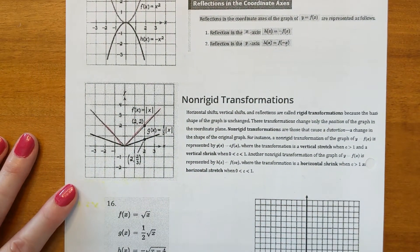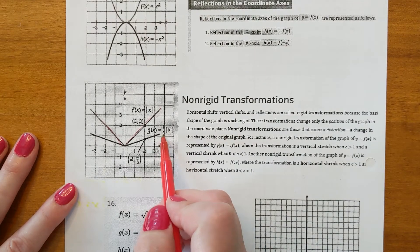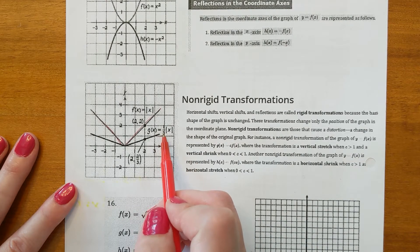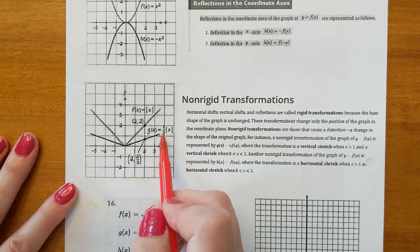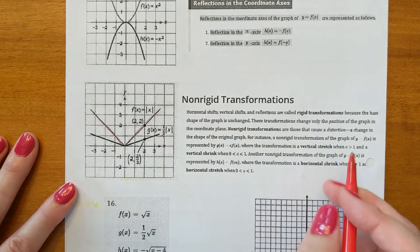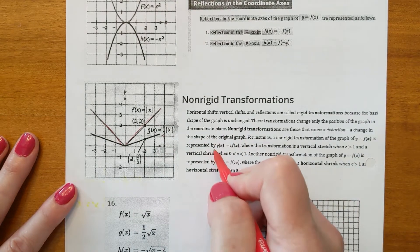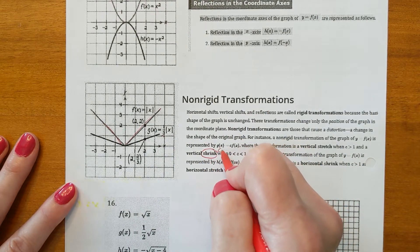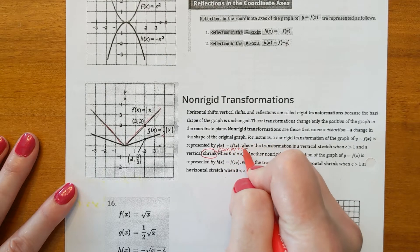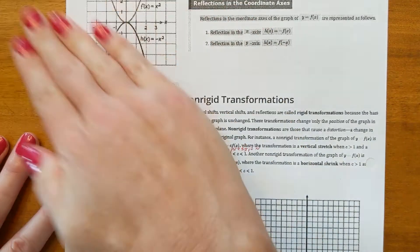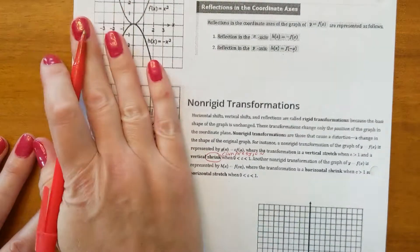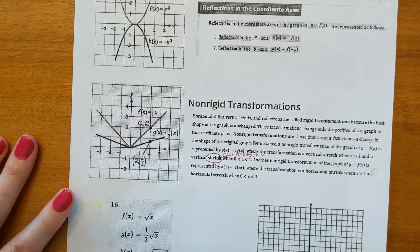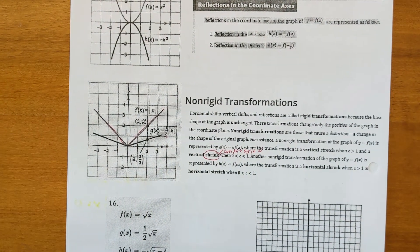Down here we've got non-rigid transformations, which means the shape changes. Here's the parent absolute value function. It was multiplied outside by 1/3. Since it's outside, it affects the y. Since it's less than 1, that makes it a shrink — another word for shrink you might hear is compression. The graph looks compressed or smashed down. This book calls it a shrink.